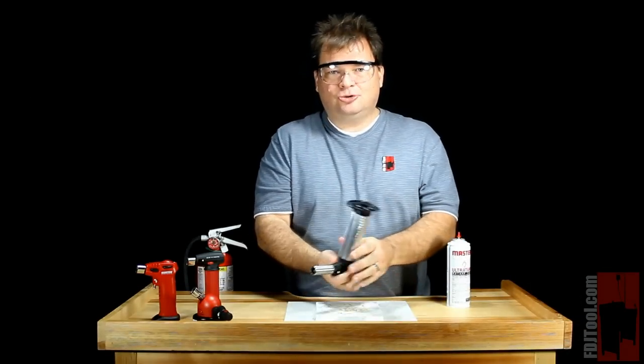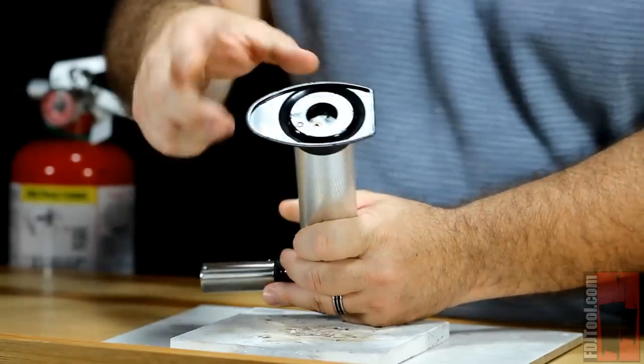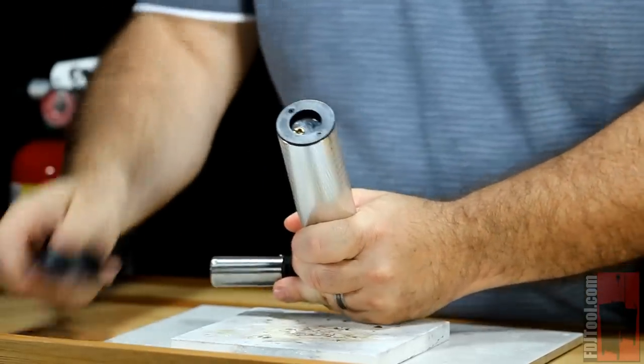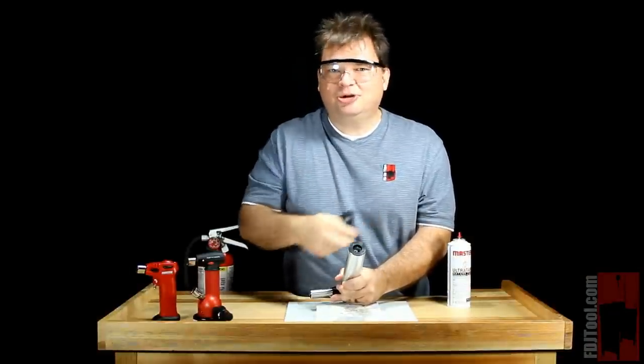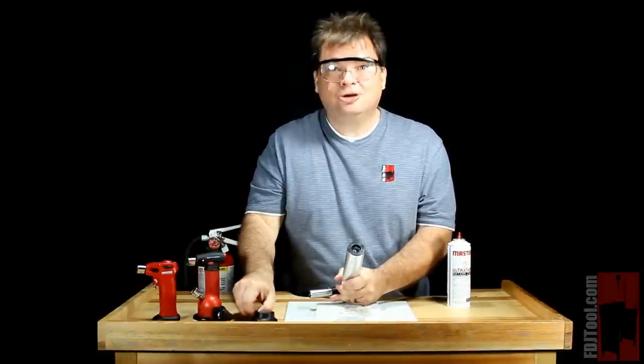Then we're going to invert our torch, turn it upside down so that we have access to this brass nipple that's on the bottom here. Let me go ahead and take the base off so you can get a better view. It's got a hole in the bottom so you really don't have to take the base off in order to get the butane in, but I want you to get a good view of that.